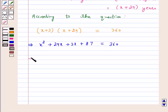This implies X squared plus 32X plus 87 minus 360 equals 0. Again, we can write this as X squared plus 32X minus 273 equals 0.